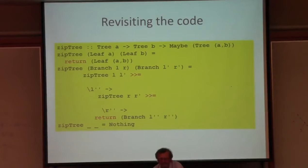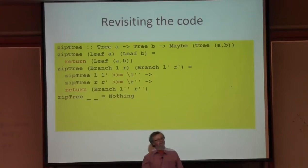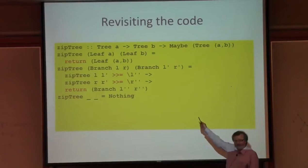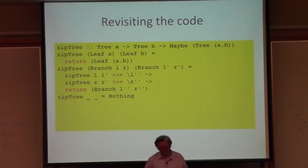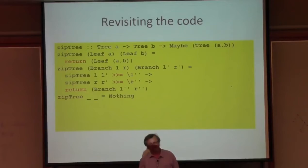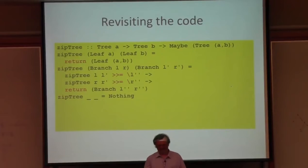After refactoring, I apply the same transformation to the second recursive call. Let me now just reformat the code. This is laid out in a way that may be unfamiliar if you haven't been using monads - the lambda expression has its lambda at the right-hand end of one line and its body on the next. But you can now read the code almost naturally: zip the left subtrees, call the result L'', zip the right subtrees, call the result R'', then return a branch containing those two. That's quite a good improvement.